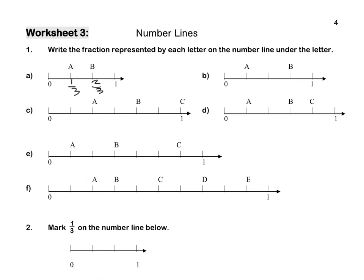Let's look at C. From 0 to 1, I have divided my whole into 6 equal parts. Therefore, I'm working with sixths. A is going to be 2 sixths.